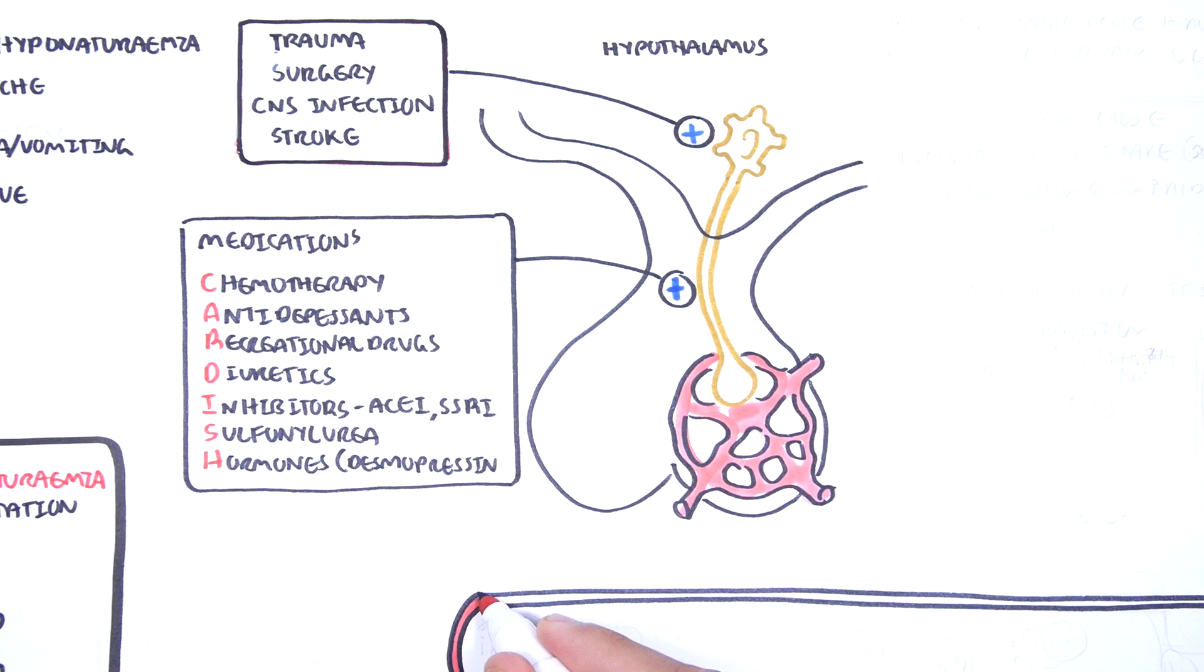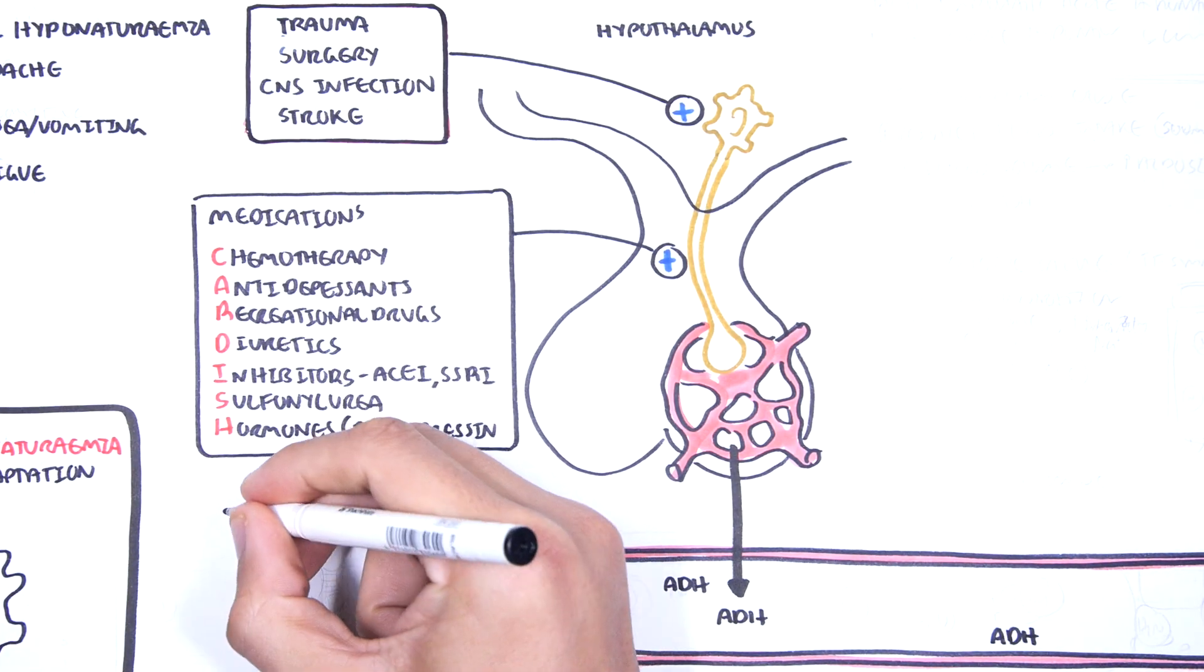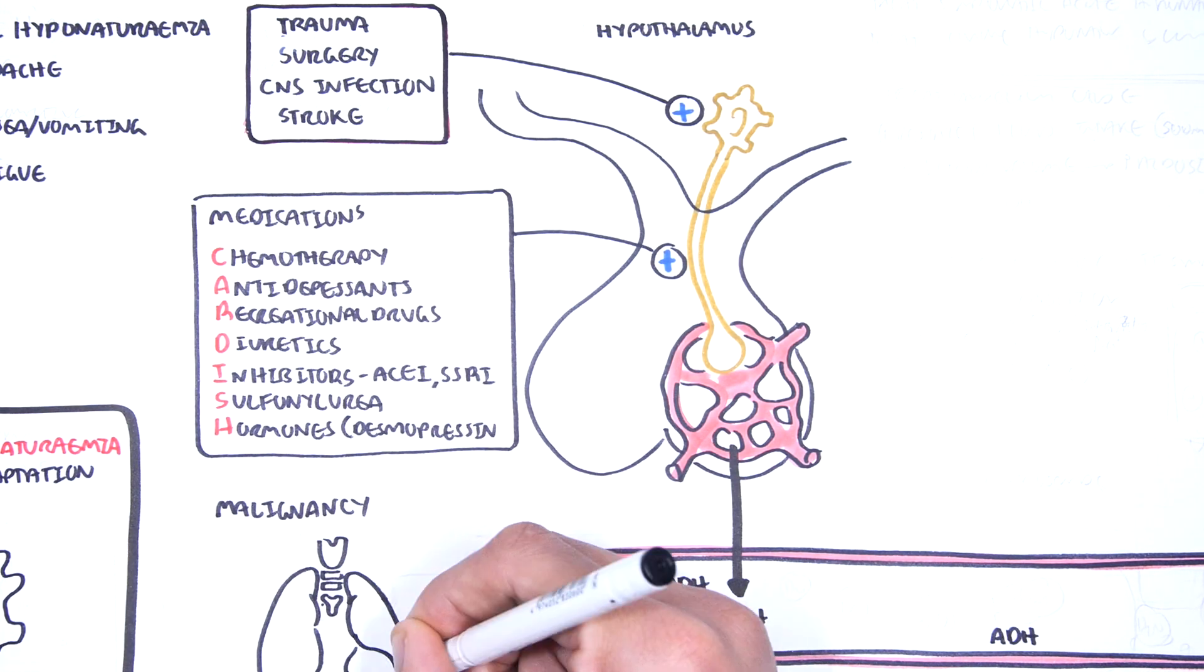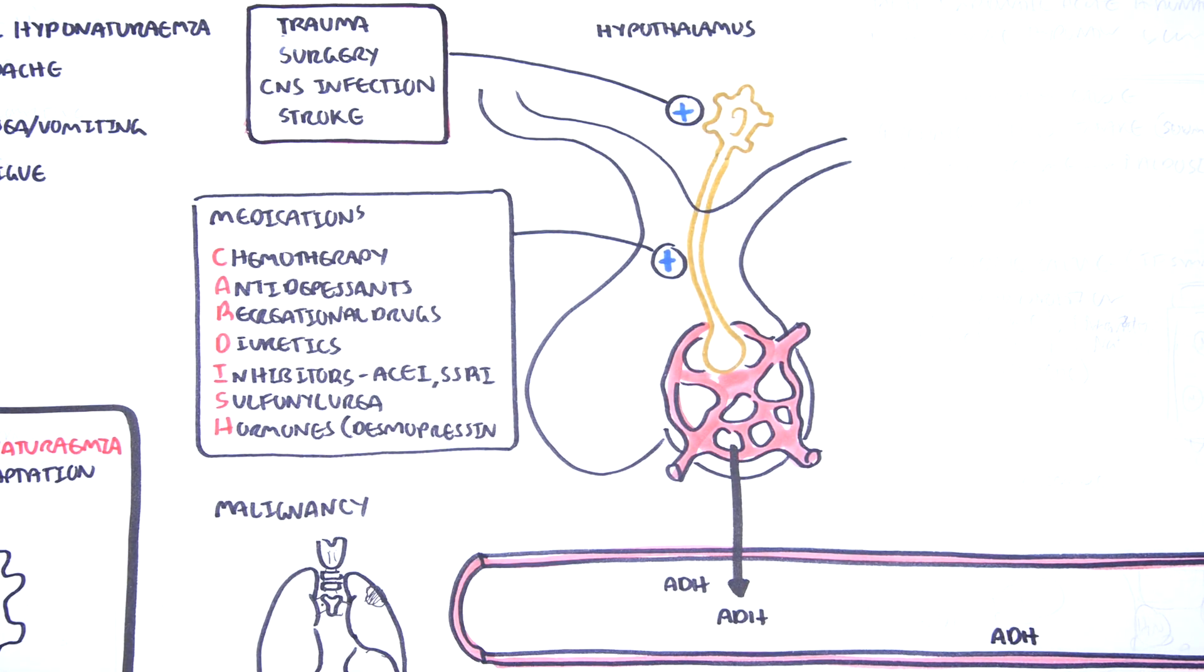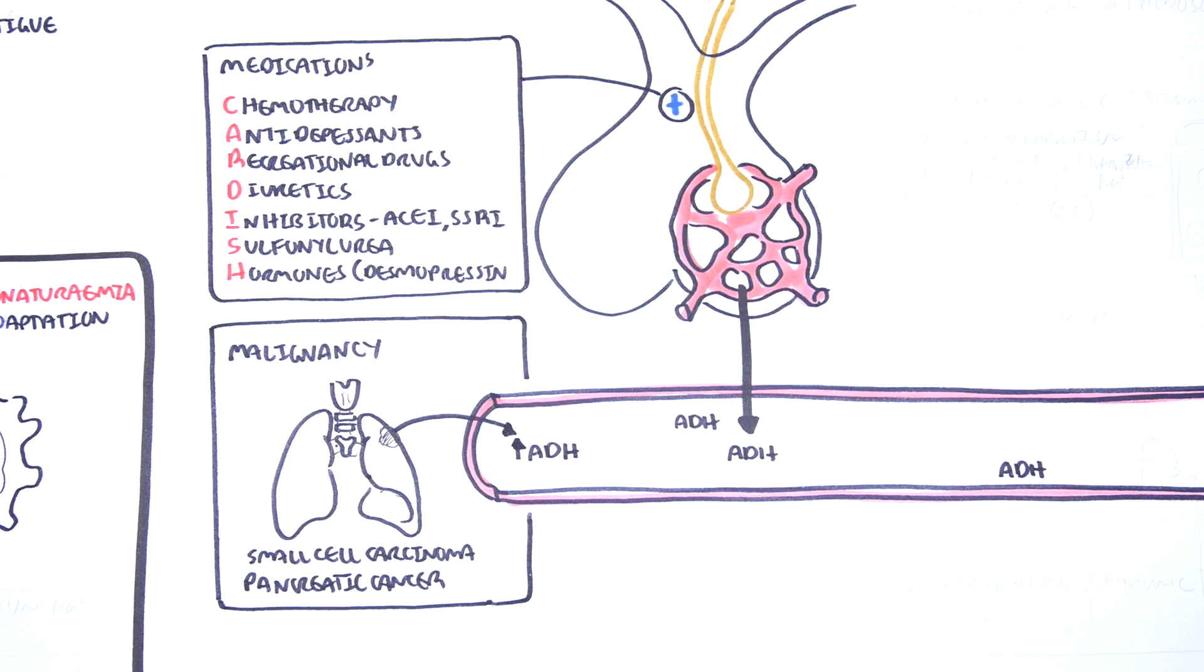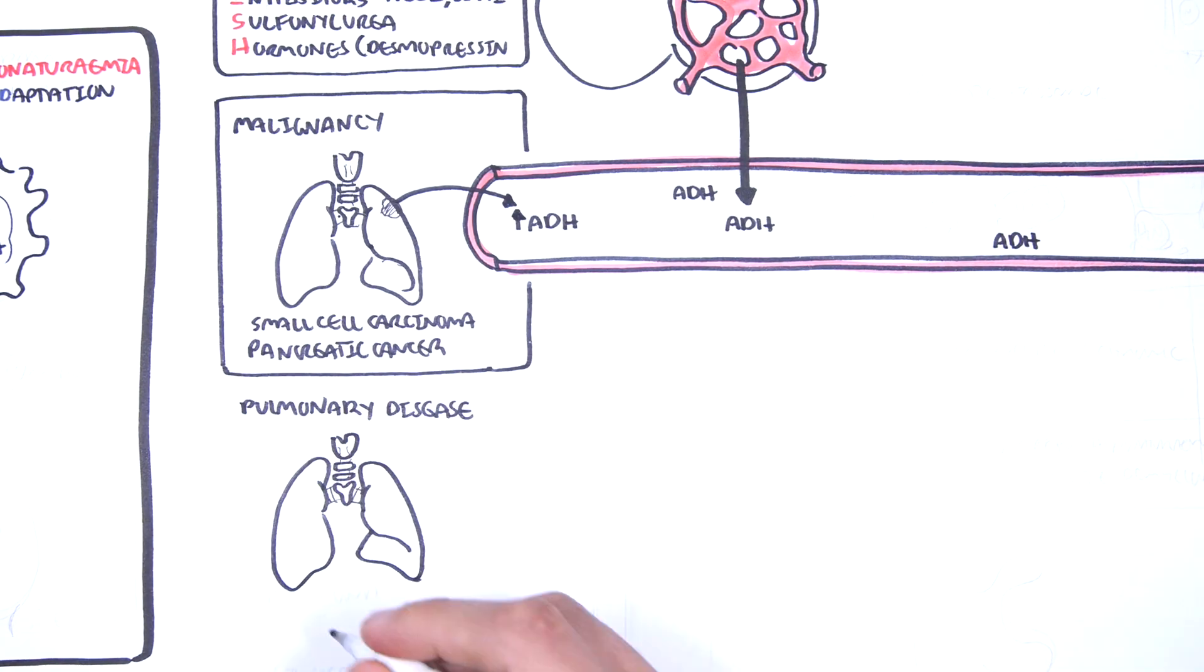Another cause for SIADH are the malignancies, which cause ectopic production of ADH. Common examples include small cell carcinoma of the lung and pancreatic cancer. Pulmonary disease such as pneumonia can increase ADH production somehow.